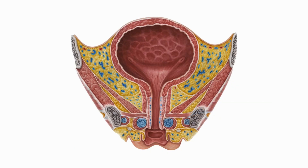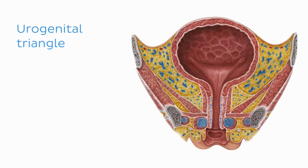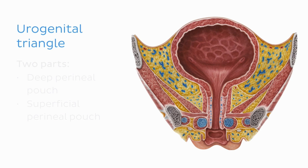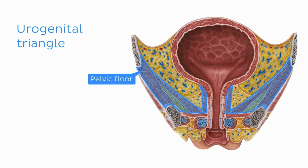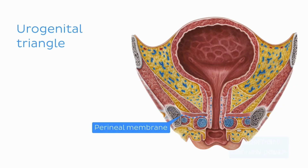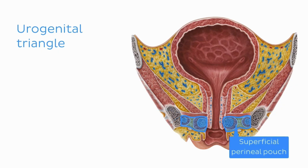The perineal membrane divides the urogenital triangle into two parts: the superior deep perineal pouch and the inferior superficial perineal pouch. So from the pelvic floor, as we move inferiorly to the urogenital triangle, we find the deep perineal pouch, then the perineal membrane, and inferior to that, the superficial perineal pouch.